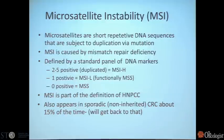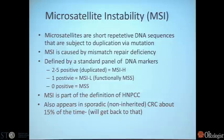Having microsatellite instability is part of the definition of HNPCC or Lynch syndrome. This is an inherited disorder where families tend to have a predominance of colon cancer, but also uterine cancers and other cancers as well. Interestingly, this appears sporadically in 12 to 15% of early stage cancers. So if you look at all patients who are MSI high with colon cancer, only a small fraction are actually going to have Lynch syndrome — the rest are a sporadic mutation.